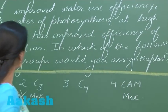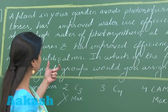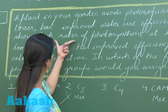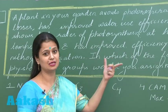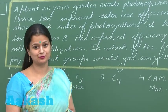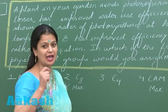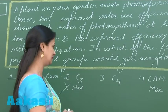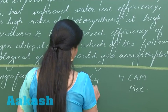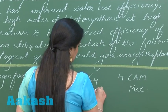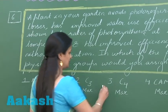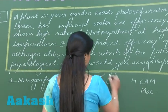We are still unable to find the right option, so now we have to look at the rate of photosynthesis. When we talk about the maximum rate of photosynthesis, surely the maximum rate is performed by the C4 plants. This means the right option for this question is option number three.